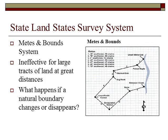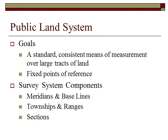Imagine all of the land in those public domain states. With the public domain system, Thomas Jefferson put together the Rectangular Survey System. He was hoping to get a standard, consistent means of measurement for large areas of land — all of those blue states on the map — and fixed points of reference that wouldn't shift with the topography. He didn't have to worry if the river moved or the oak fell or the marker was moved. The survey would stay intact.